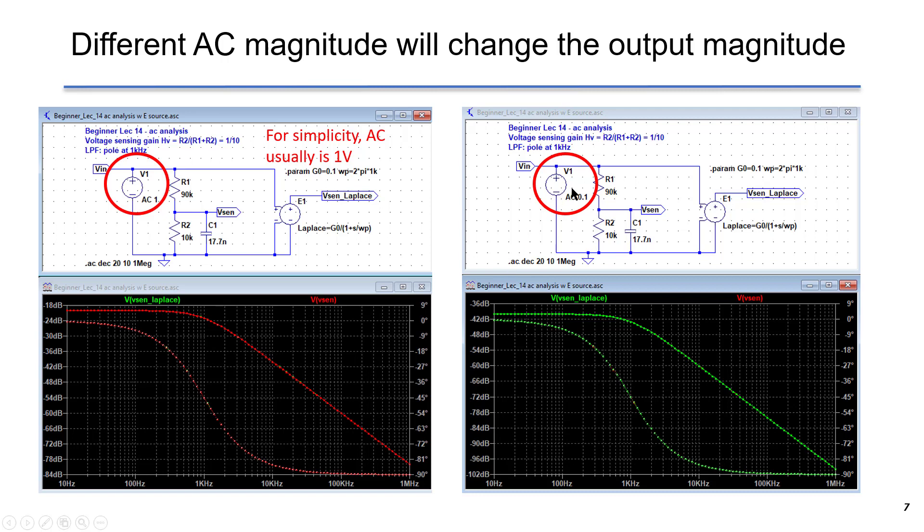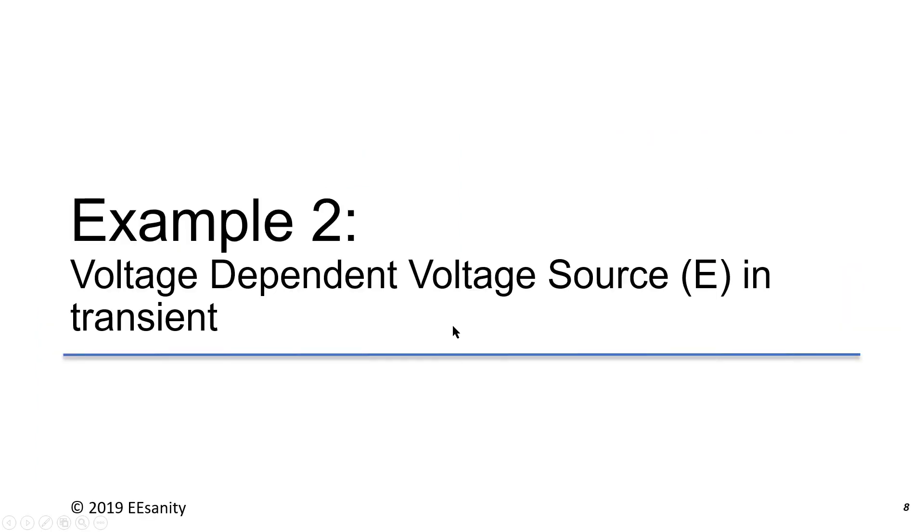In summary, if the AC amplitude is not 1, you have to explicitly put Vout over Vin to get the accurate transfer function.